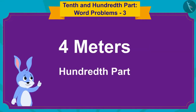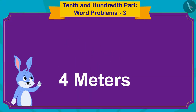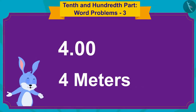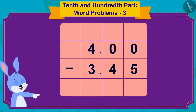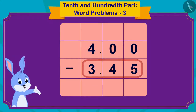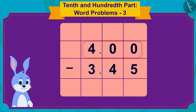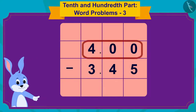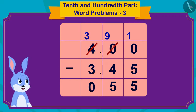In three point four five, forty five is the forty-five hundredths part. But there is no hundredths part in four, so I can also write four as four point zero zero. Now I will subtract three hundred and forty five from four hundred using this simple process of subtraction.